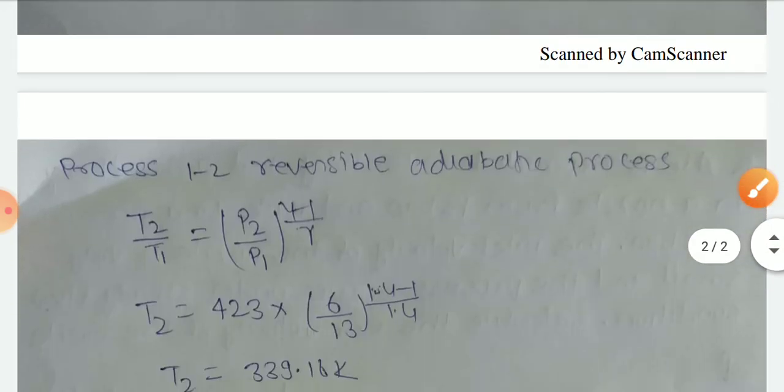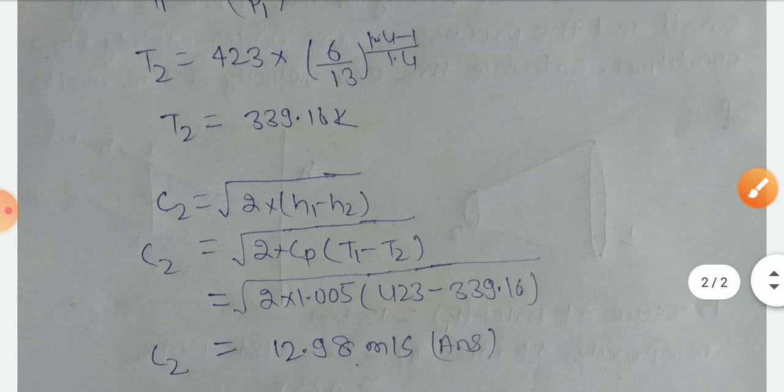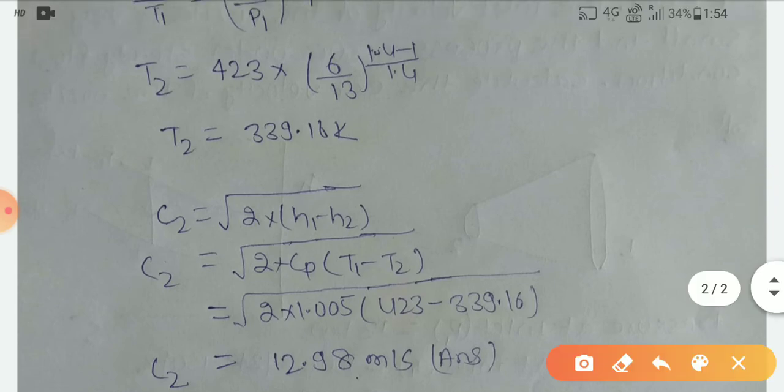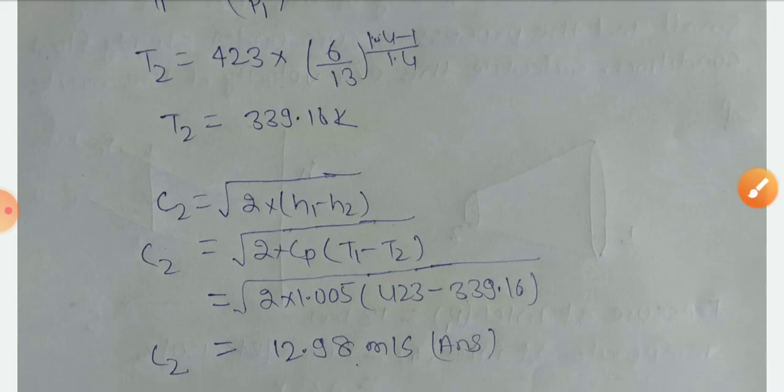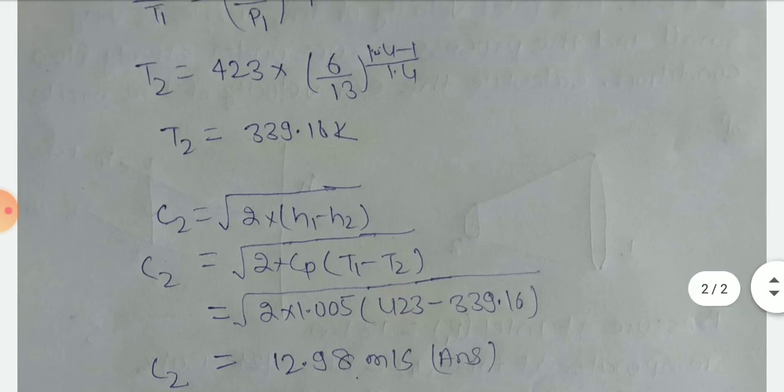Now I can also write C2 = √(2·Cp·(T1 - T2)). Enthalpy is not given, but temperature T1 is known and T2 you can find with the help of the process.